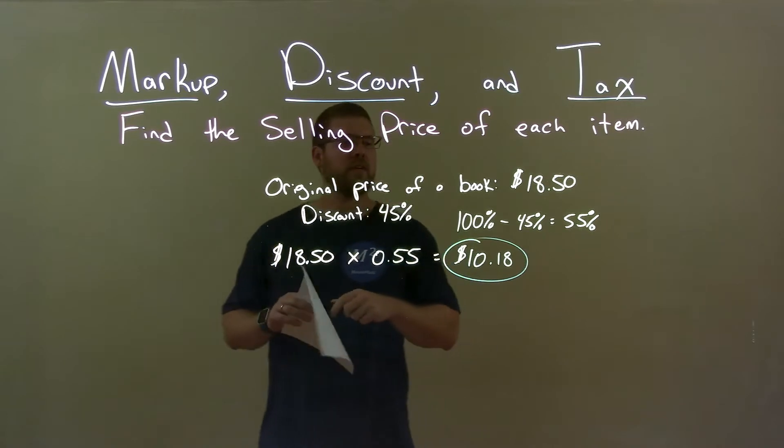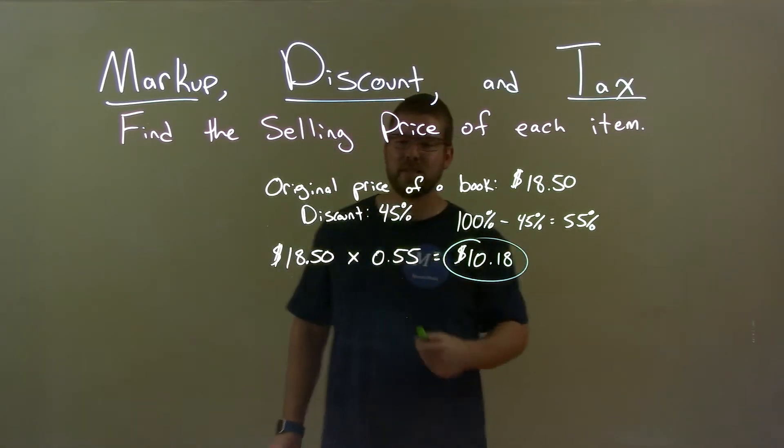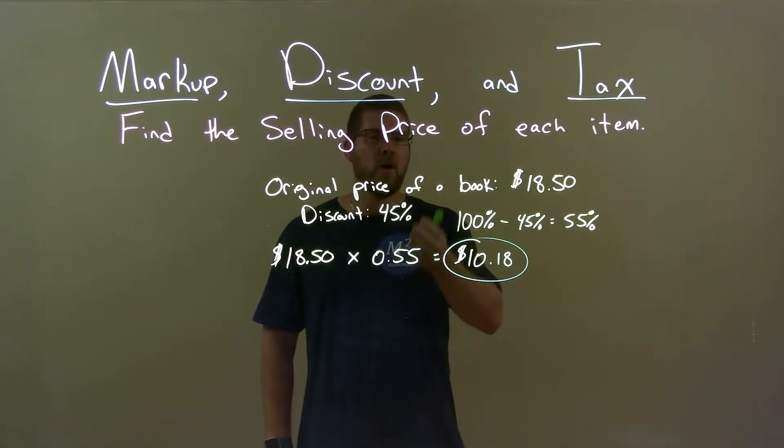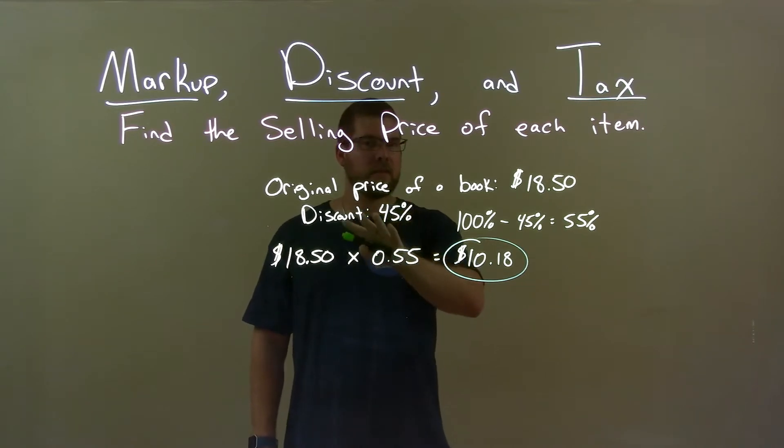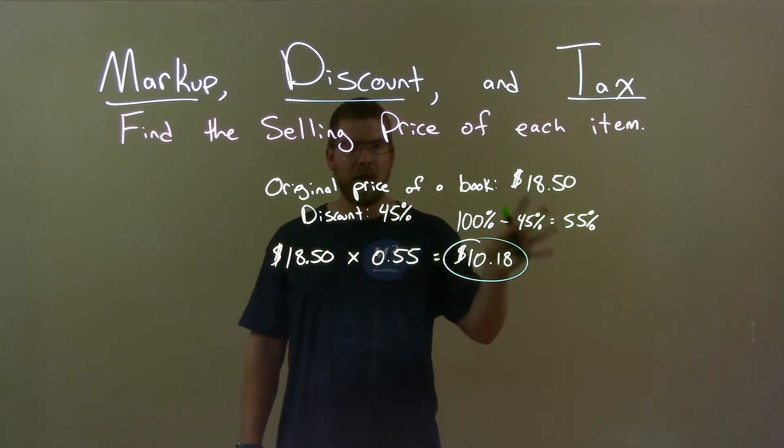Quick recap. We're given the original price of the book is $18.50, and its discount is 45%. Well, at 45%, right, the discount, we only pay 55% of the original book price.